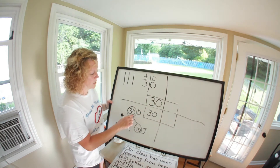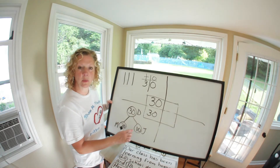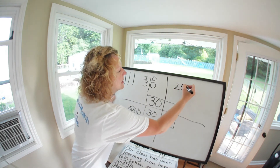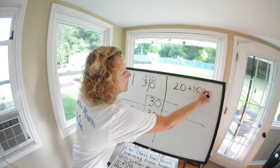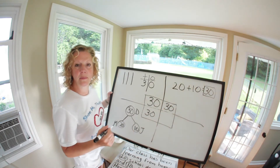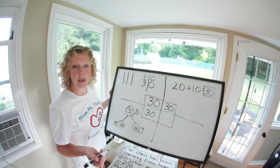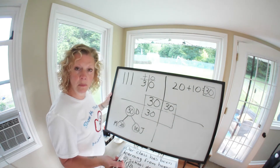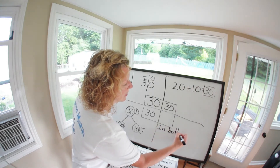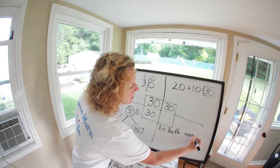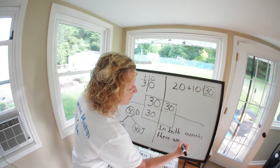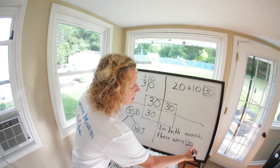The other way we could do it: we know our ones aren't going to change, so those stay zero. Then we add two plus one more, which gives us three. So we write the number sentence 20 plus 10 equals 30, put a box around 30. In both months there were 30 days.